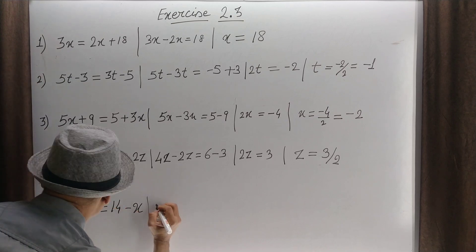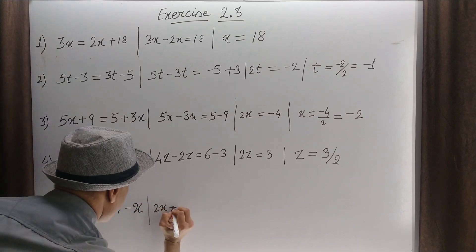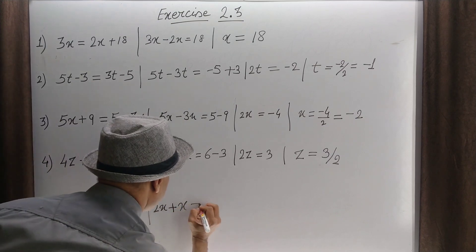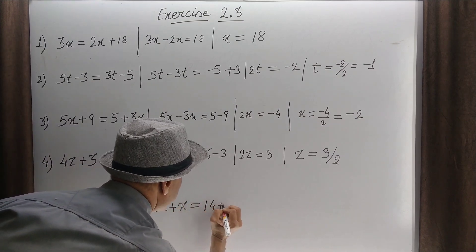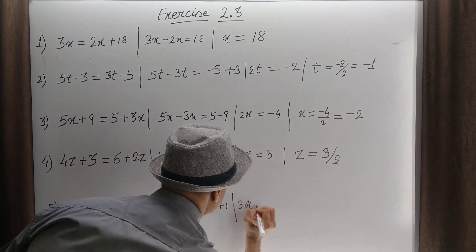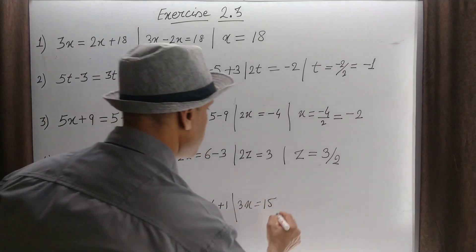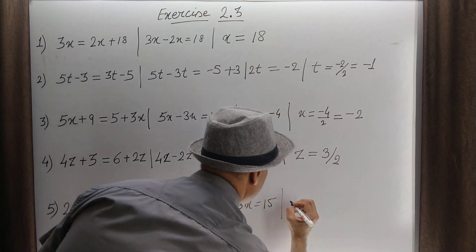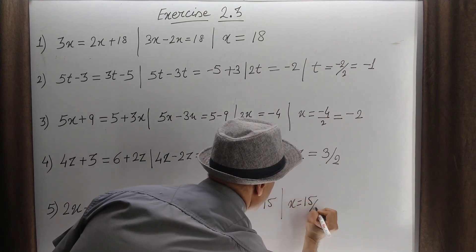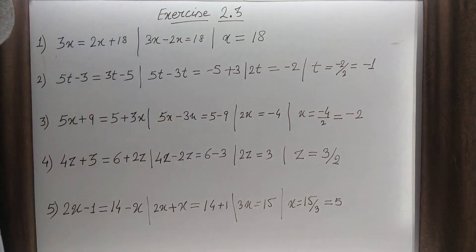This can be written as 2x plus x is equal to 14 plus 1. So 3x is equal to 15. Therefore x is equal to 15 by 3, that is 5. Clear?